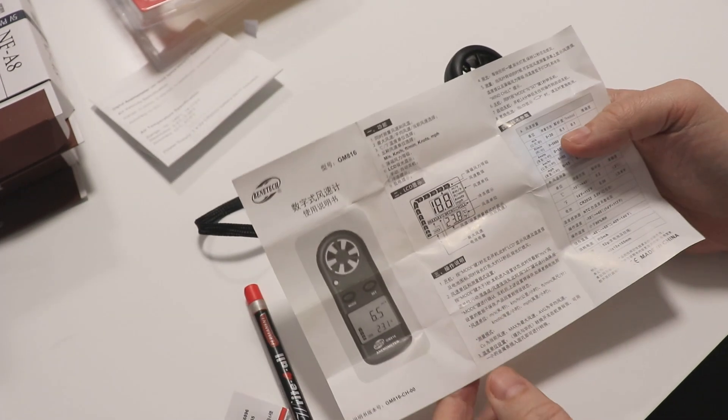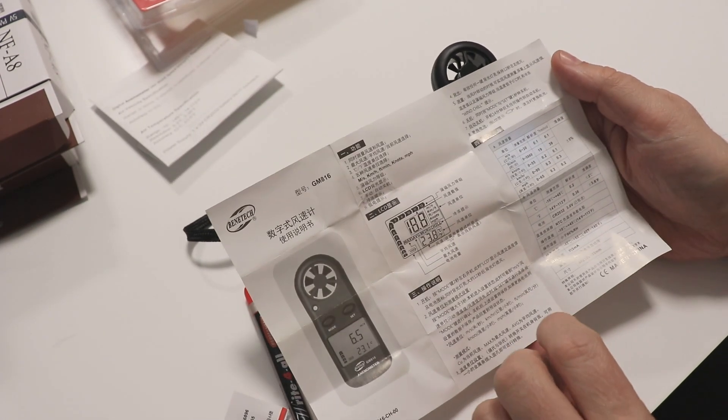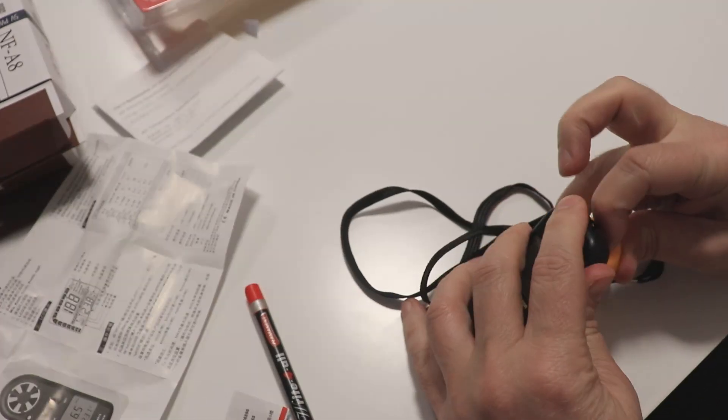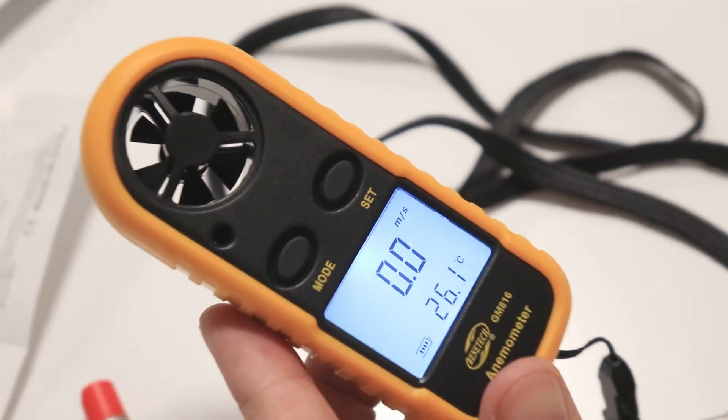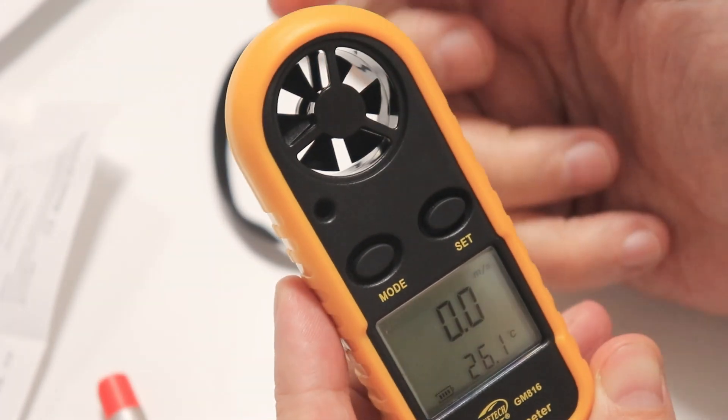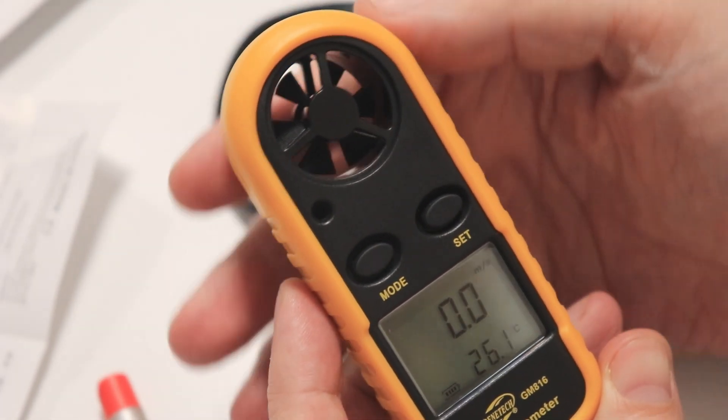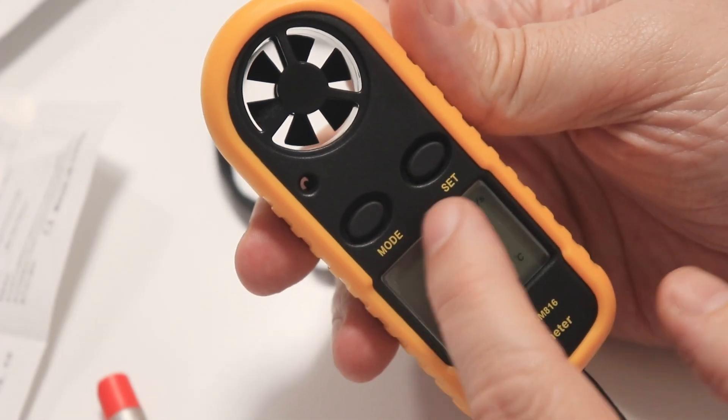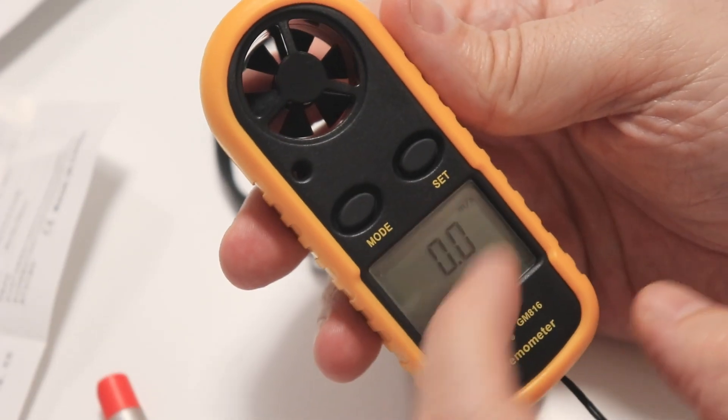Now unfortunately this user manual is in Chinese so I have to figure out myself how it works. First, quickly analyze the structure. There is the fan which when rotates measures the speed. There is the temperature sensor and then we have these two buttons, the mode and the set. And this is the display.